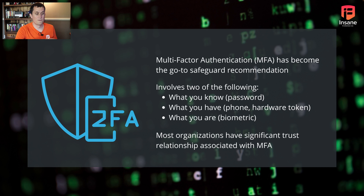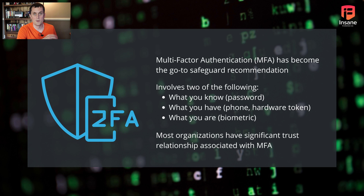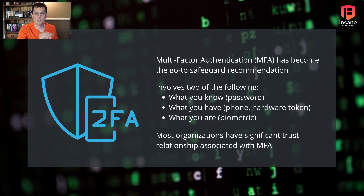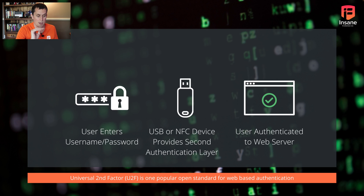Starting out with a quick overview: multi-factor authentication requires at least two of the following — something you know, which is generally a password; something you have, which is often an app on your phone or a hardware token like a YubiKey or near field communication keys; and what you are, such as biometrics, fingerprints, or retinal scans. Most organizations have a significant trust relationship with multi-factor authentication, and a lot don't understand the limits of it — which is what we're going to be talking about today.